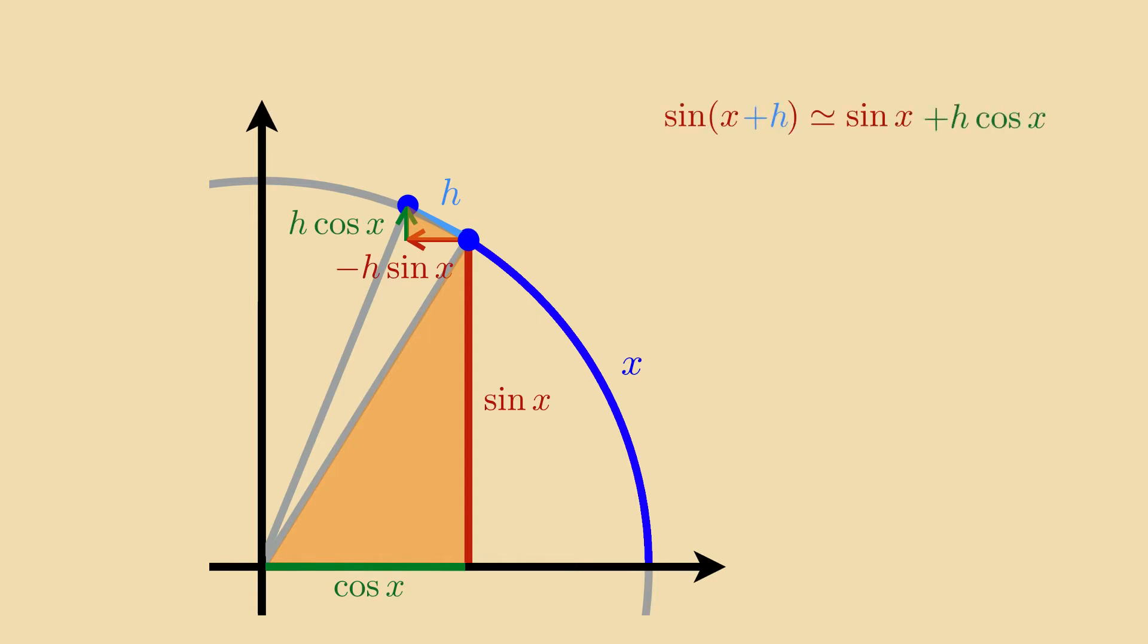Therefore we can write sine of x plus h is approximately sine of x plus h times cosine of x. The approximative nature stems from the fact that, strictly speaking, the small hypotenuse h is curved, not straight. But this error becomes increasingly small as h is chosen smaller and smaller.